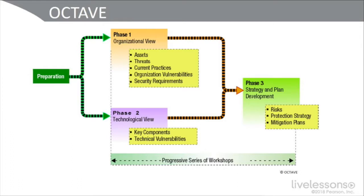As you can see in the diagram, it all begins with preparation — that's the first phase. Phase one is taking the strategic organizational view. What are our assets in our situation? What are our mobility assets? What are the threats to those assets? What are we currently doing — what is our current mobile device practice? What do we have on our written security policy, the AUP for using mobile devices? What are the organizational vulnerabilities? From a broad strategic level, what are our vulnerabilities? And what are our requirements organizationally? That's going to be discovered first.